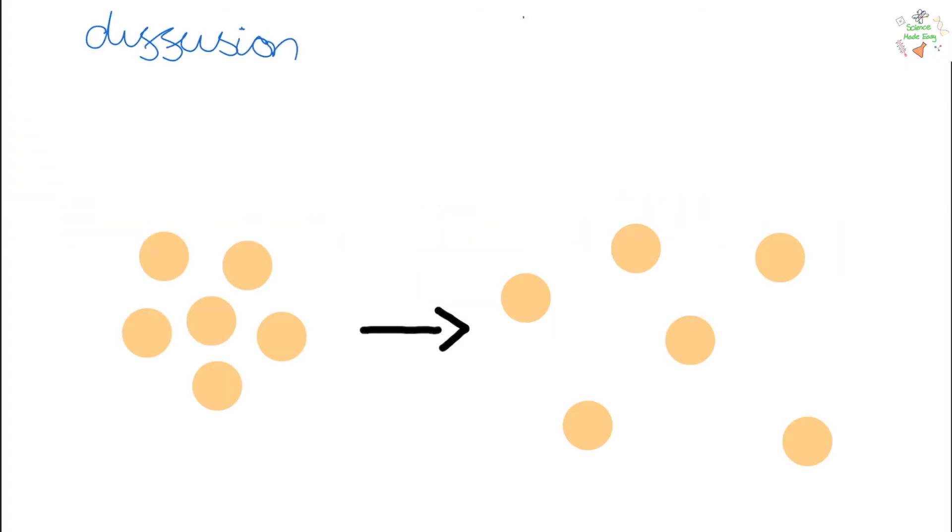So diffusion is the movement of particles from a high to low concentration. An example of this would be spraying some air freshener and it diffusing out into the surroundings. This is a passive process, meaning it requires no energy.